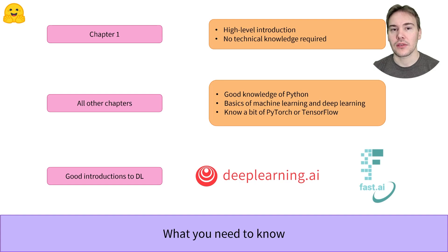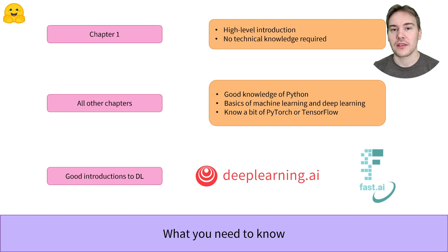The next three chapters require a good knowledge of Python and some basic knowledge of machine learning and deep learning. If you don't know what a training and validation set are, or what gradient descent means, you should look at an introductory course, such as the ones published by deeplearning.ai or fast.ai.